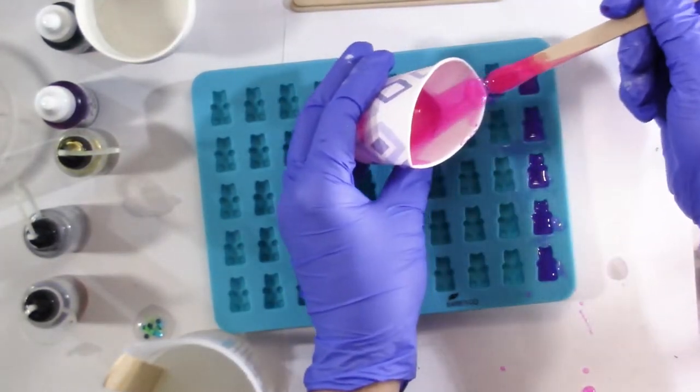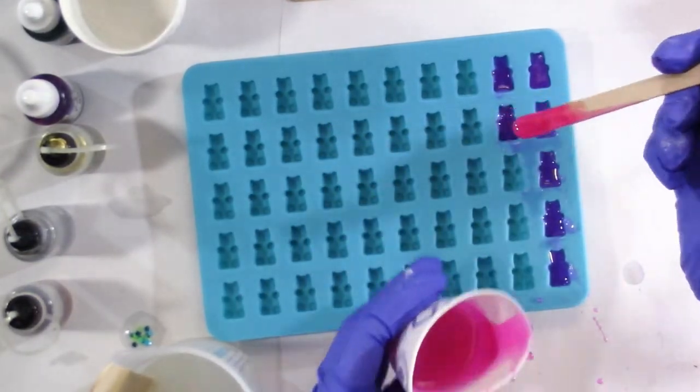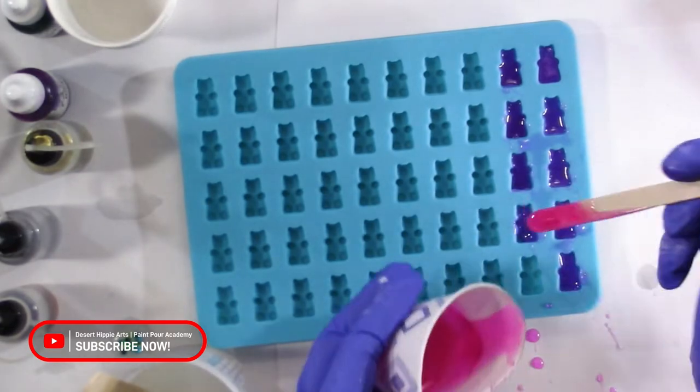I have pre-mixed my resin and added in some alcohol ink to tint it. I decided to use a pink color, a blue color, a green color, and a purple color.